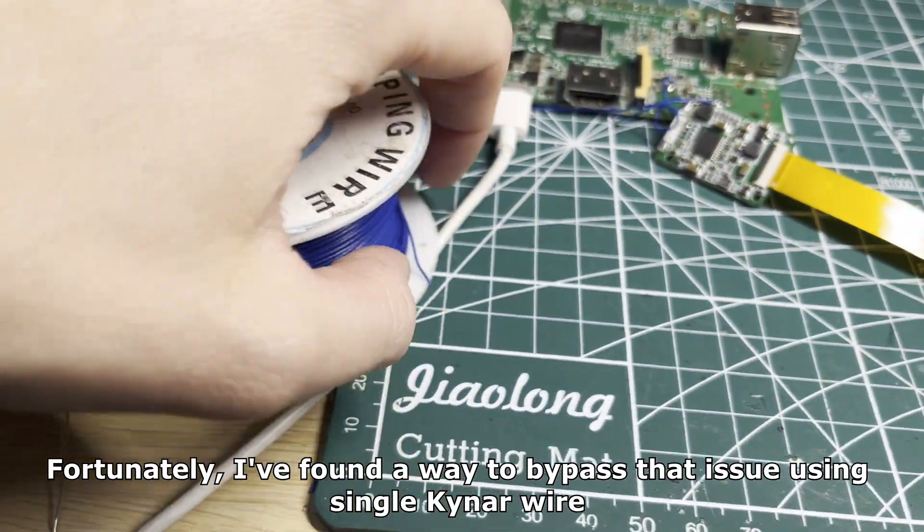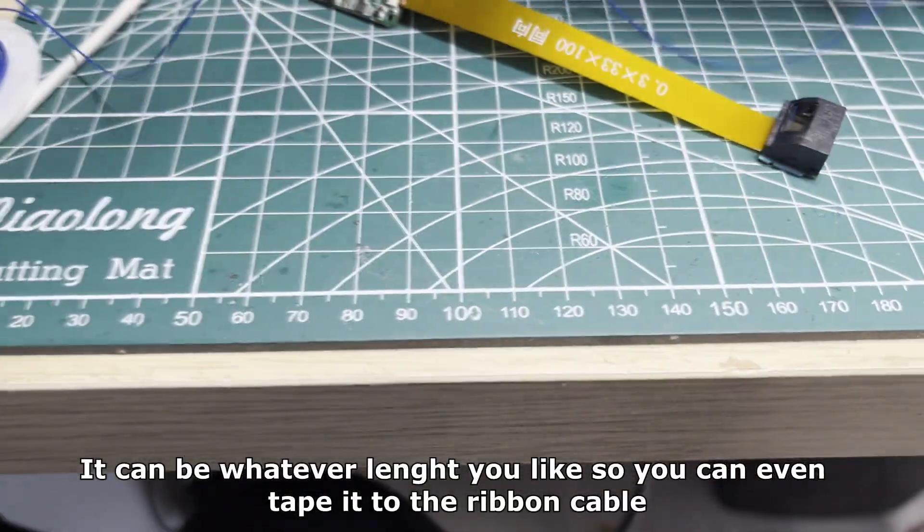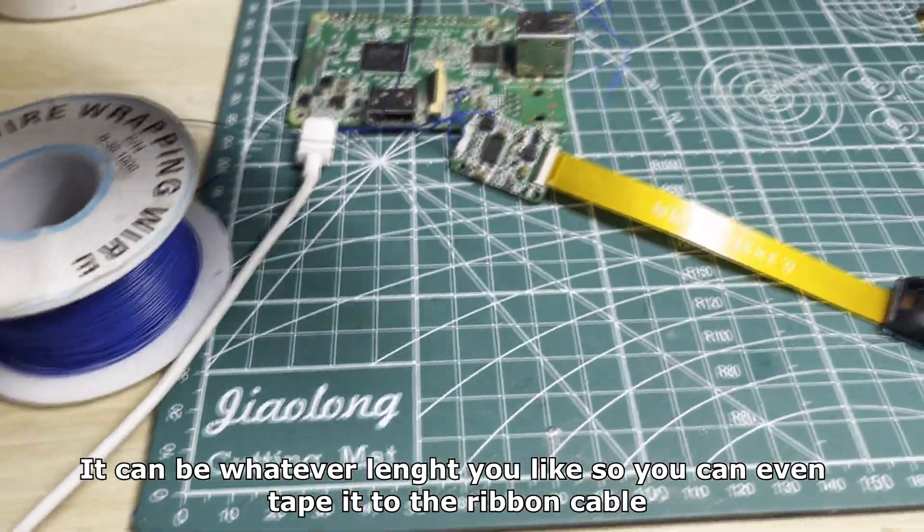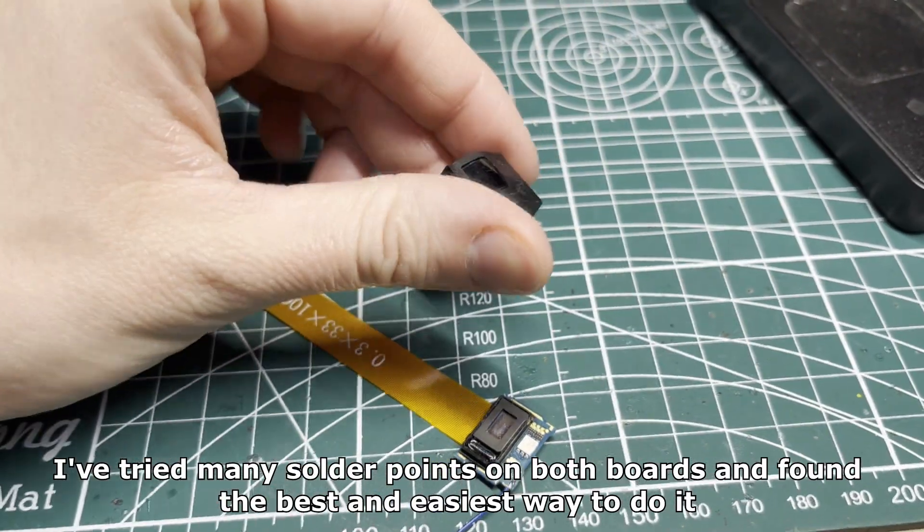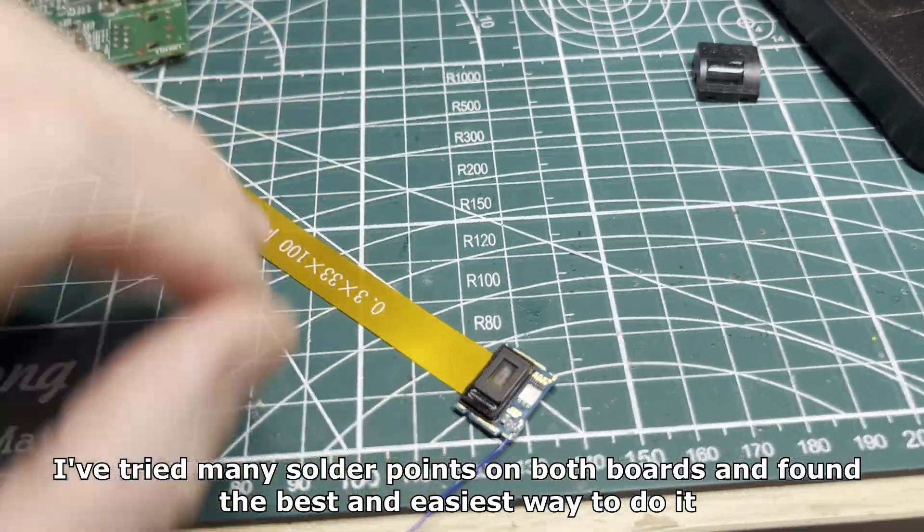Fortunately, I've found a way to bypass that issue using a single jumper wire. It can be whatever length you like, so you can even tape it to the ribbon cable. I've tried many solder points on both boards and found the best and easiest way to do it.